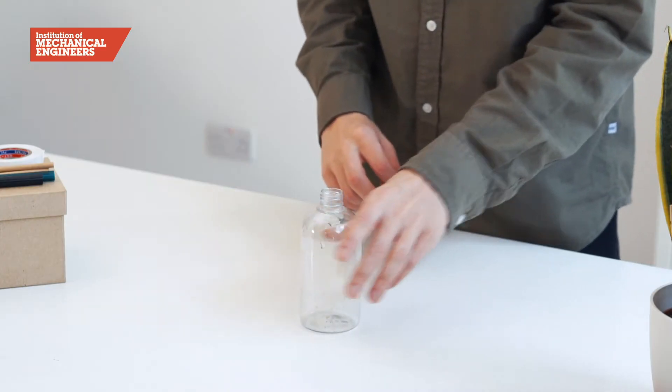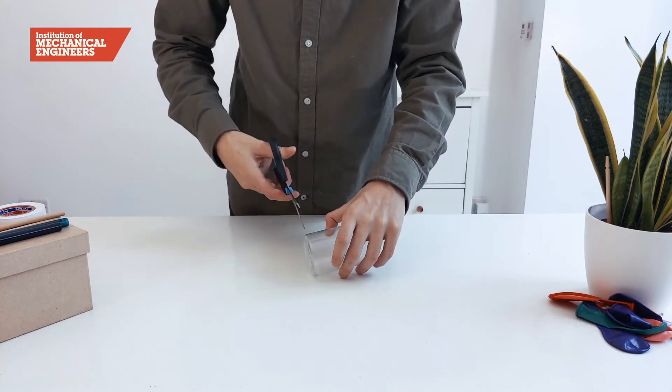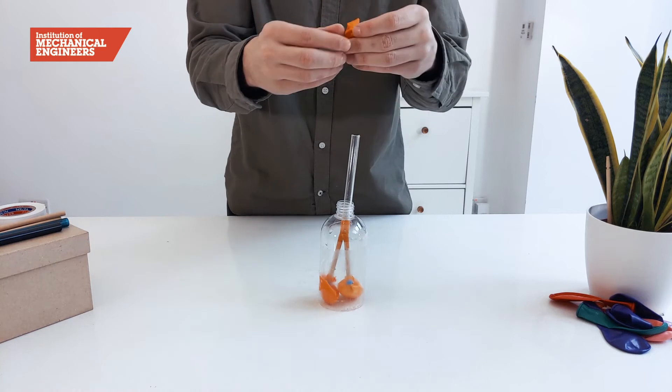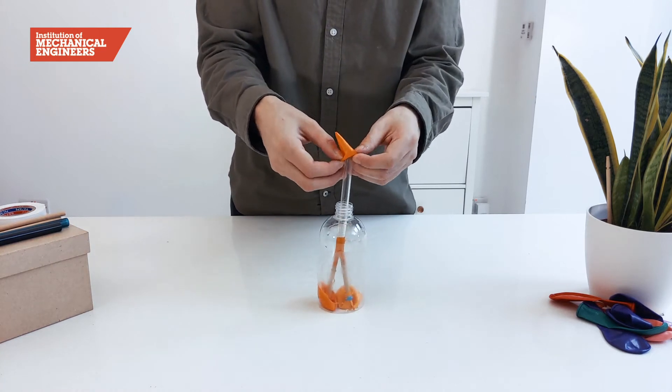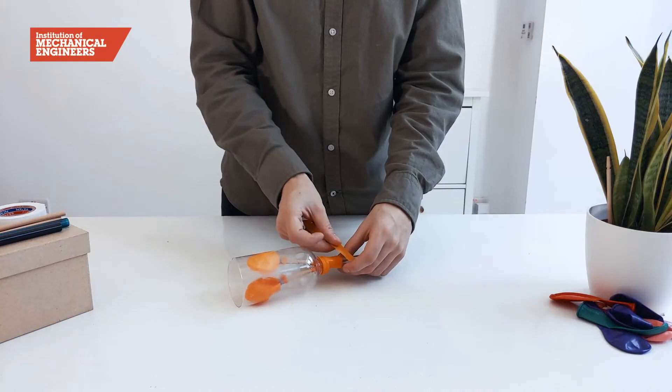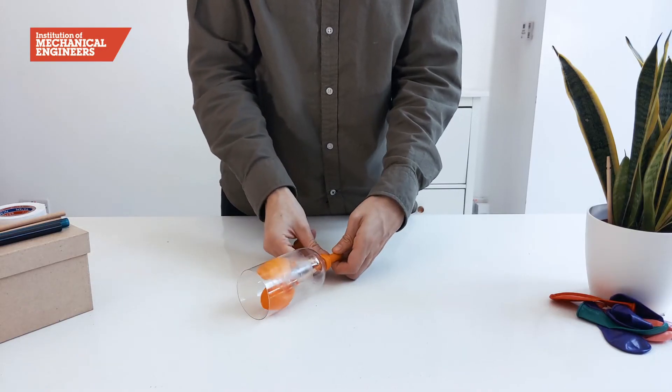Now take the plastic bottle which will act like ribs in this model and cut the bottom off. Then pull one of the ends of the balloon which we saved earlier over the neck of the bottle. We will then tape the rubber from the balloon around the trachea to create an airtight seal.